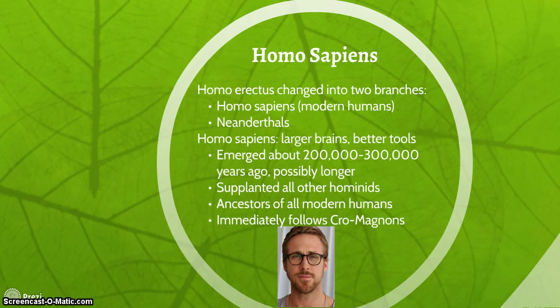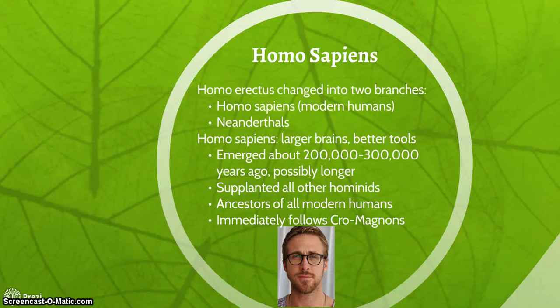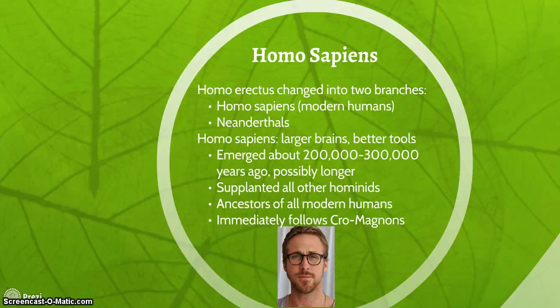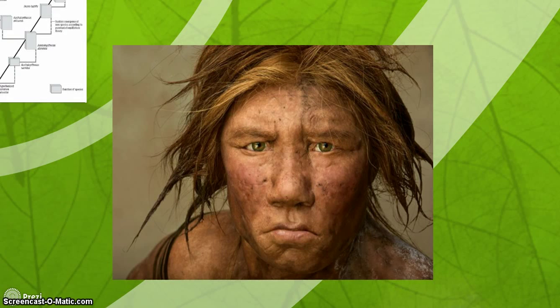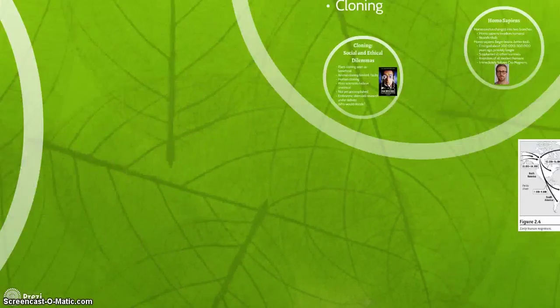Homo sapiens emerged from Homo erectus when it changed into two branches. One branch was Homo sapiens, which led to modern humans. The other were Neanderthals. There is some evidence that Homo sapiens and Neanderthals may have interbred. Homo sapiens had larger brains and better tools. They emerged about 200,000 to 300,000 years ago, possibly even longer, and eventually supplanted all other hominids. They were the ancestors of all modern humans, immediately following Cro-Magnons. Here's a picture of an artist's rendering of a possible Neanderthal — not as bad looking as you might have thought. And here's a picture of a modern Homo sapien with cool glasses.